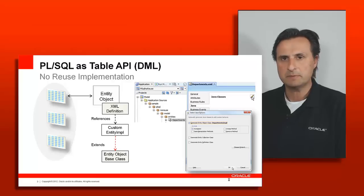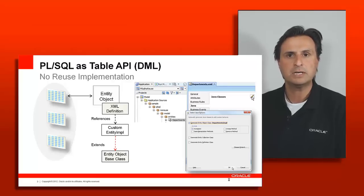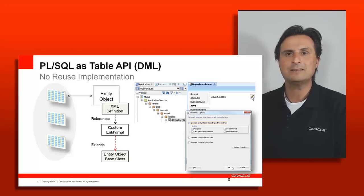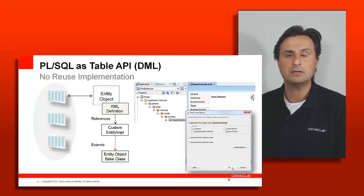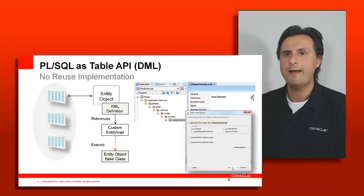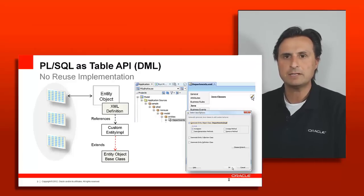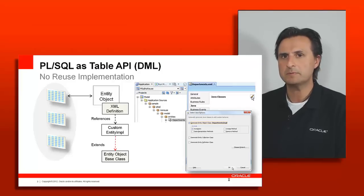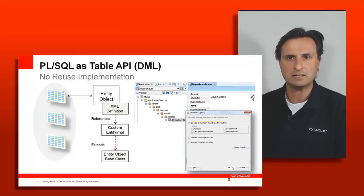To create a custom implementation file, you go to the entity editor, choose the Java option, and then create an entity impl class. This class will be created in your project, and a reference will be added to the XML file indicating that you're no longer using the base class from Oracle but your custom implementation class. Of course, your custom implementation class should extend the base class so that you don't lose any functionality.